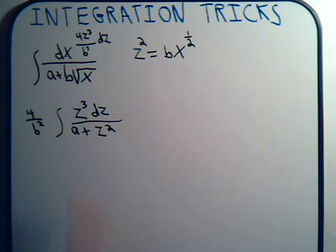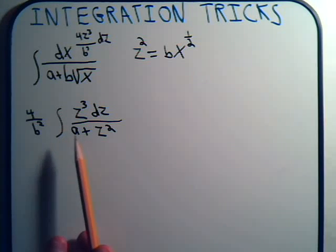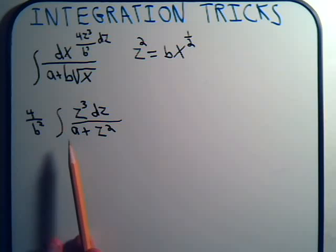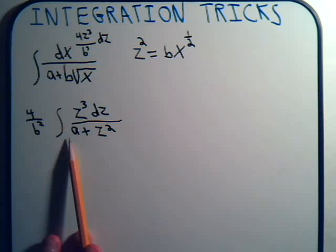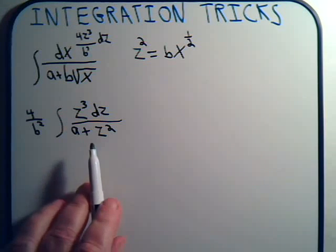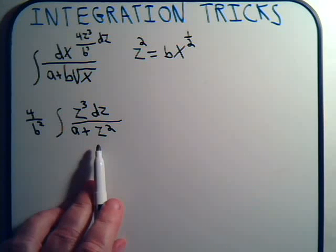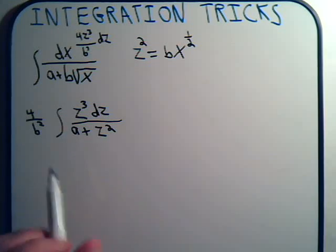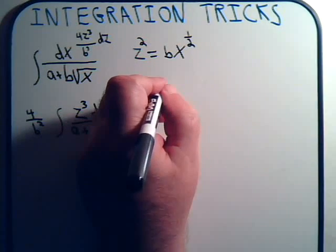Notice down here in the denominator we have a constant plus a variable squared. As we've done many times, we let z equal the square root of a times the tangent of theta.